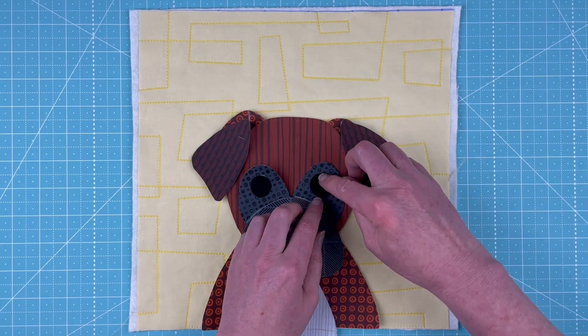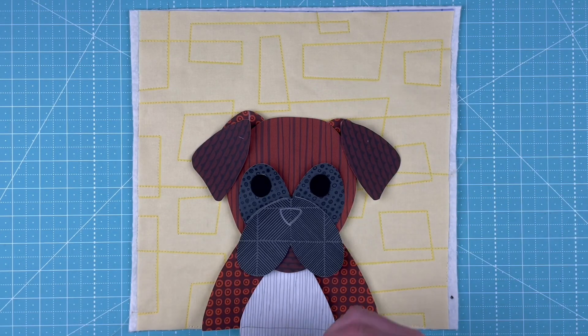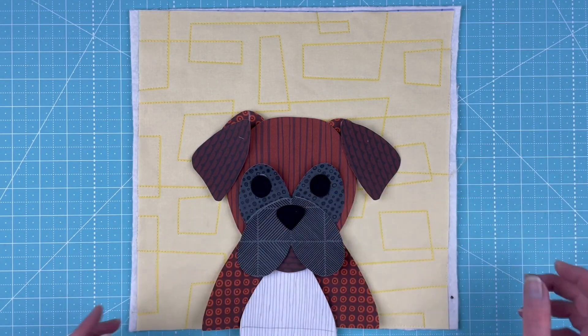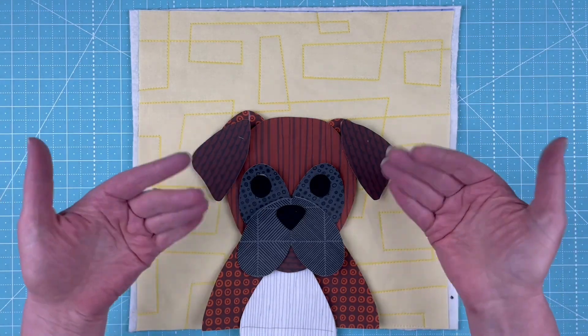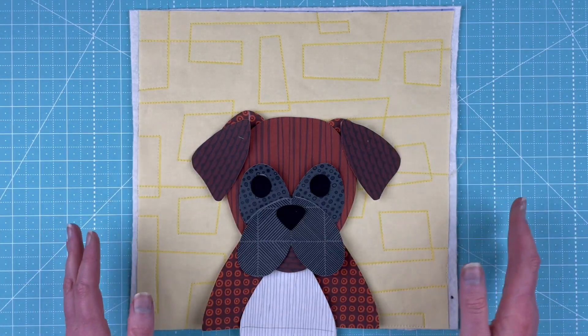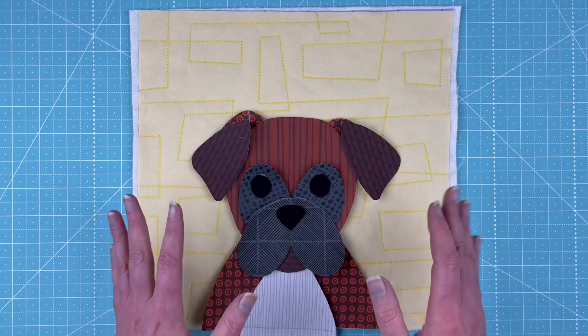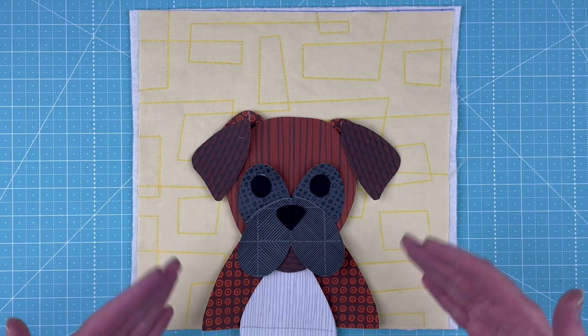Then easy peasy, we've just got eyes and the second eye and then the nose. Now this is all bowing up weird because I haven't pulled the paper off. If you were doing it, you'd be pulling those paper pieces off as you go.